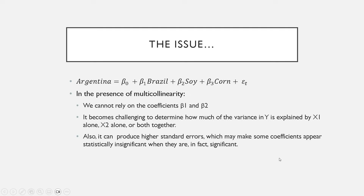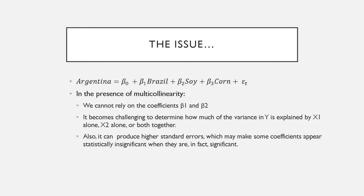Let's illustrate a bit further. This was the regression: Argentina's GDP is explained by a constant, the GDP of Brazil, the price of soy, and the price of corn — we also have an error term. In the presence of multicollinearity, we cannot rely on the coefficients beta 1, beta 2, and beta 3, because it's going to become very challenging to determine how much of the variance in y — Argentina's GDP — is explained by Brazil's GDP, the price of soy, and the price of corn. Also, multicollinearity can produce higher standard errors, which can make some coefficients appear statistically insignificant when they are in fact significant, and the opposite is also true.